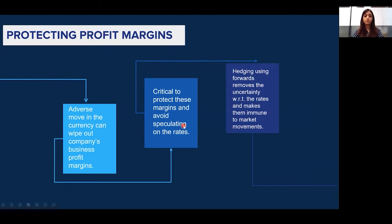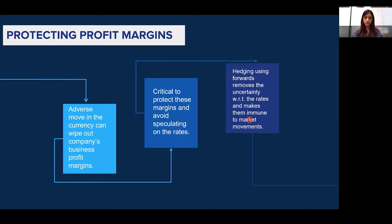Hence it is critical for businesses to protect their business profit margins and not speculate on the rates. Costing and budgeting is done at the current spot rate, hence business profit is calculated on that basis. If we hedge using forward contracts, the forward rate we get equals spot plus the forward premium. This locks in the rate at which our costing is done — that is, the spot rate — while also protecting our business profit margins. When you hedge, your business margin is protected irrespective of market movements. Let's look at an example to understand this better.